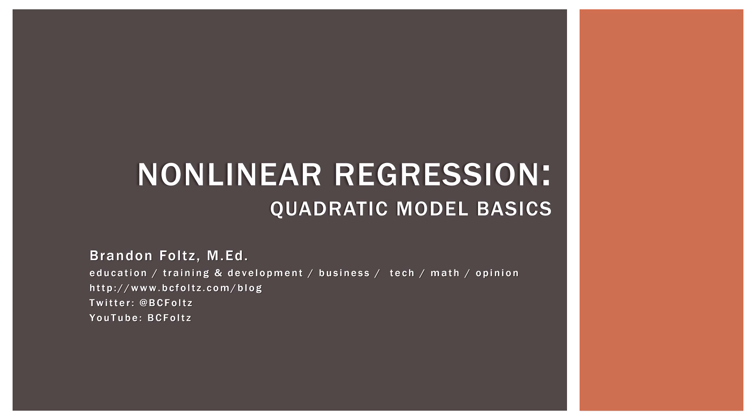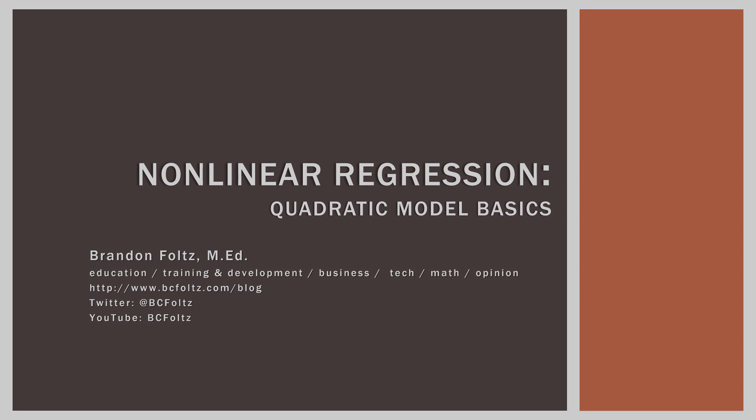That wraps up our second video on non-linear regression, where we learned about quadratic model basics. We looked at how a model is developed, and then we looked at some general patterns of quadratic models based on the signs of the two coefficients b-sub-one and b-sub-two — the sign determines the definite shape of the graph. We also learned how to find the hill or valley of the quadratic model using simple calculus. I hope you enjoyed the video and I look forward to seeing you in the next one. Take care.